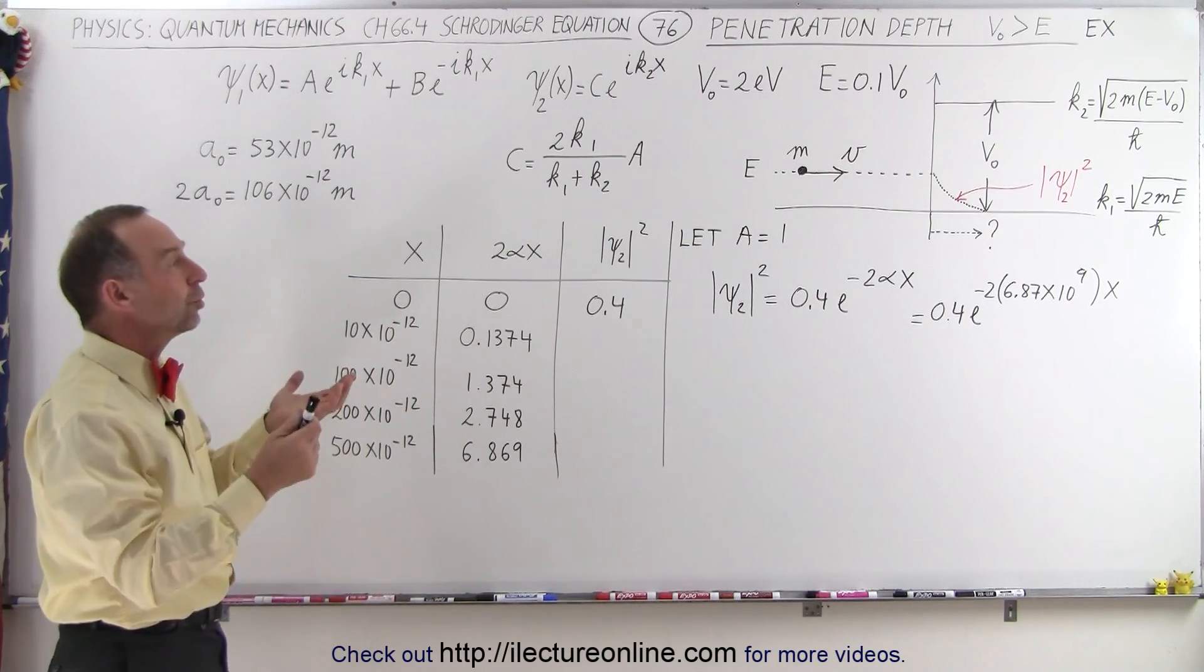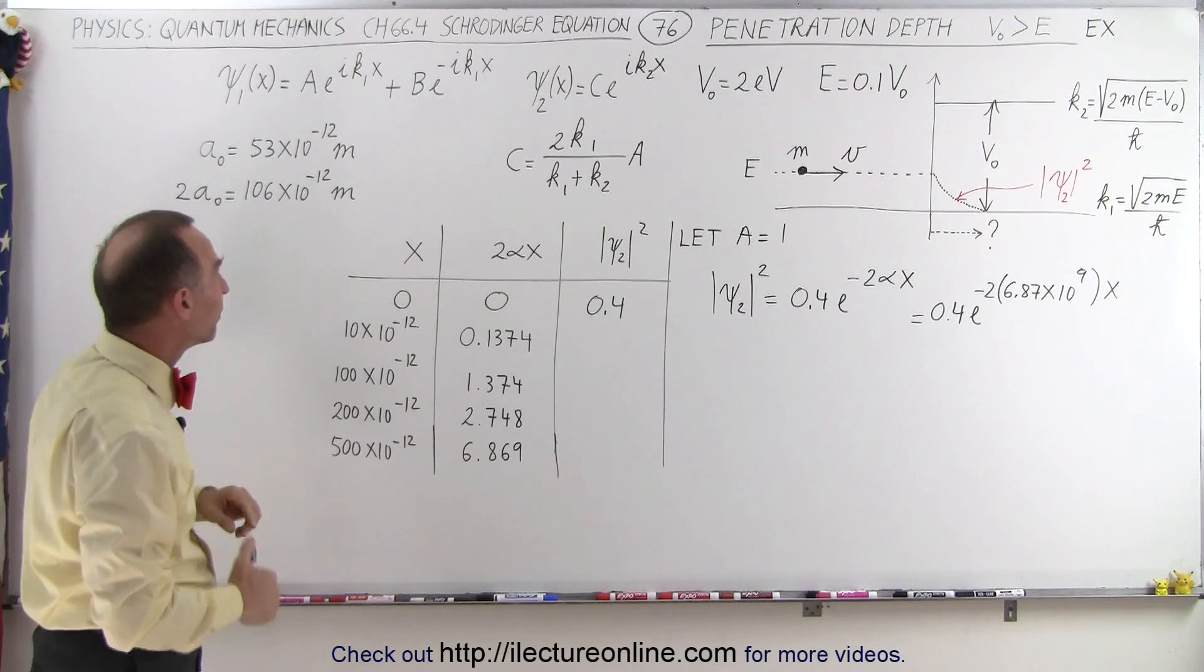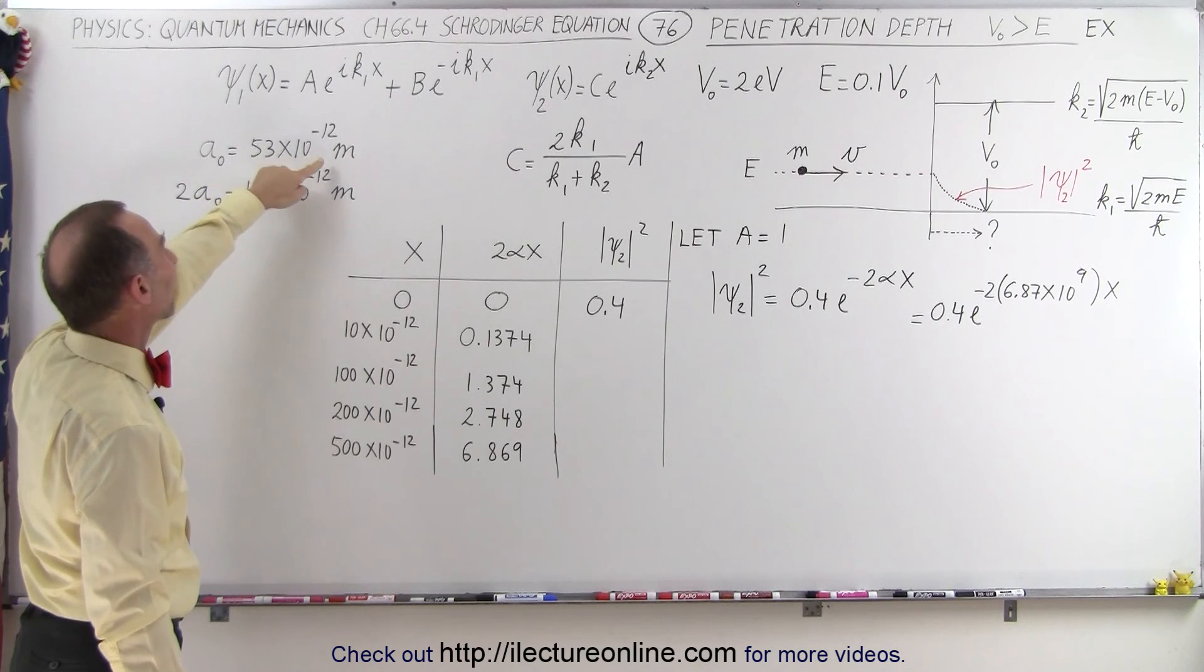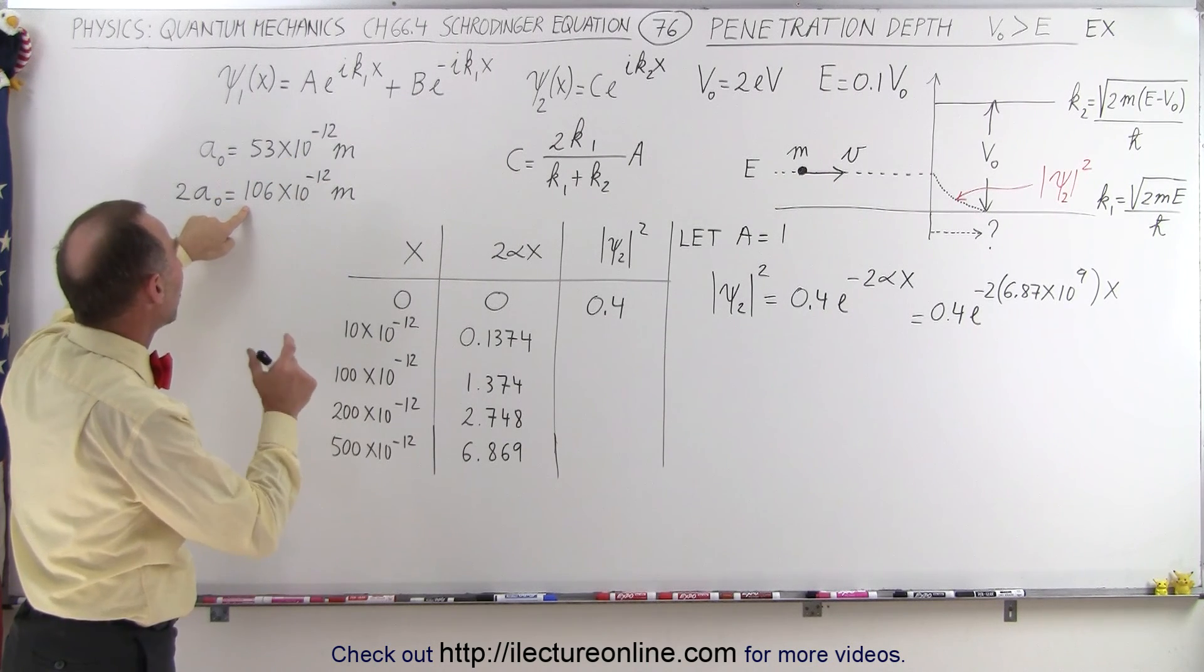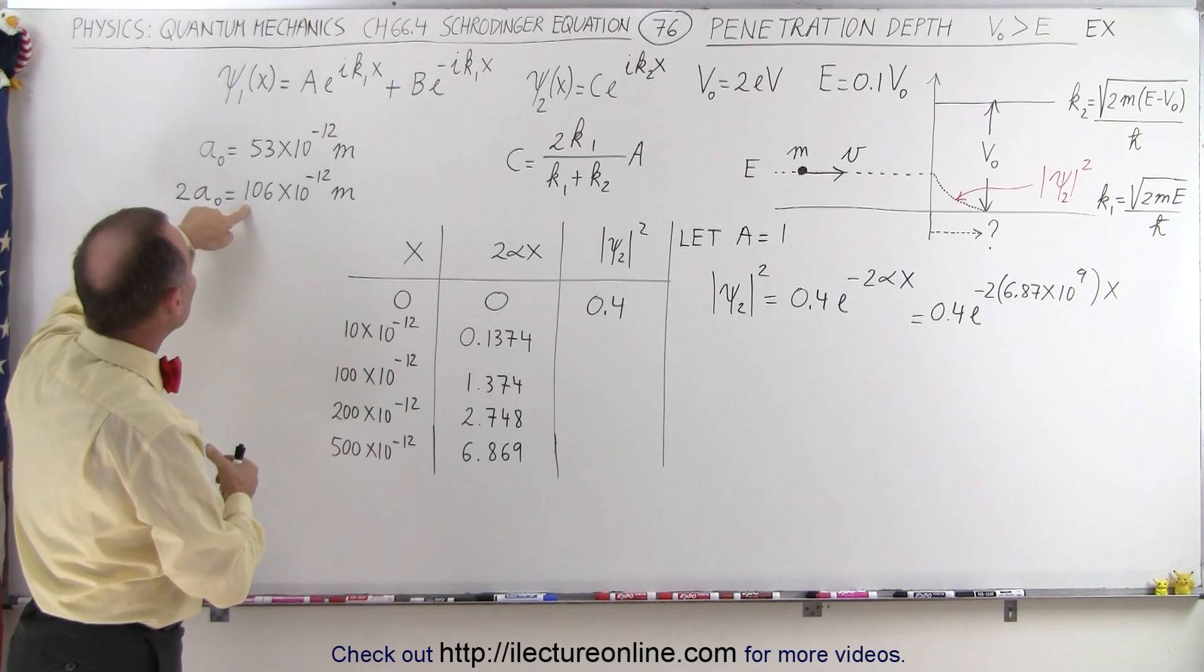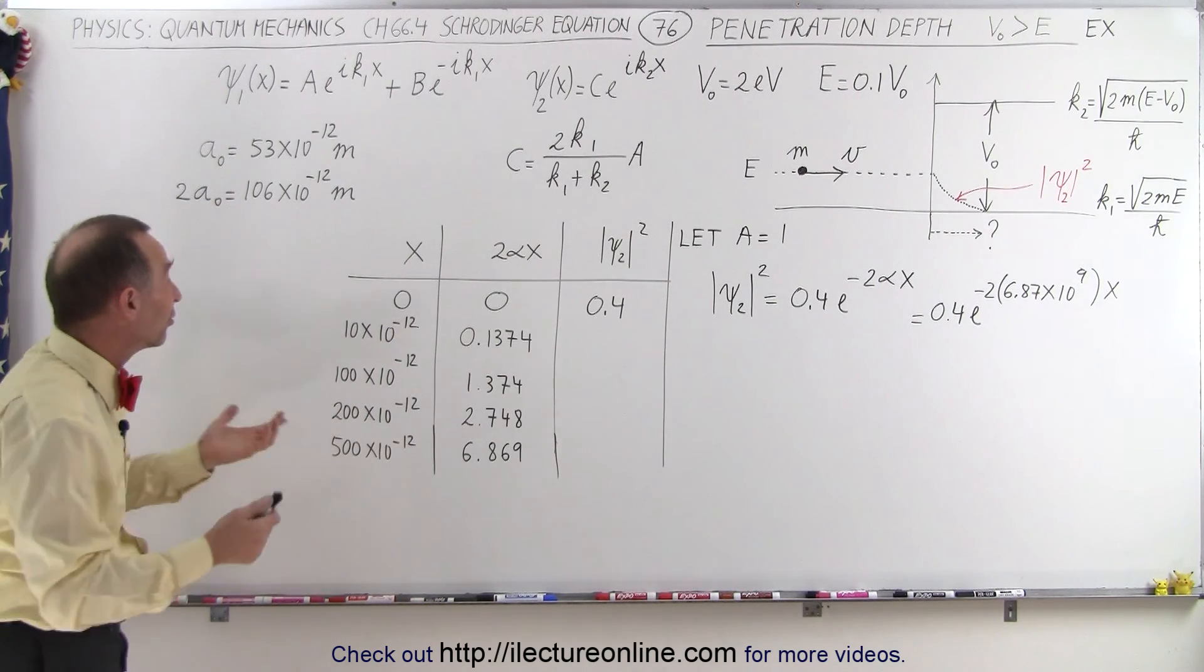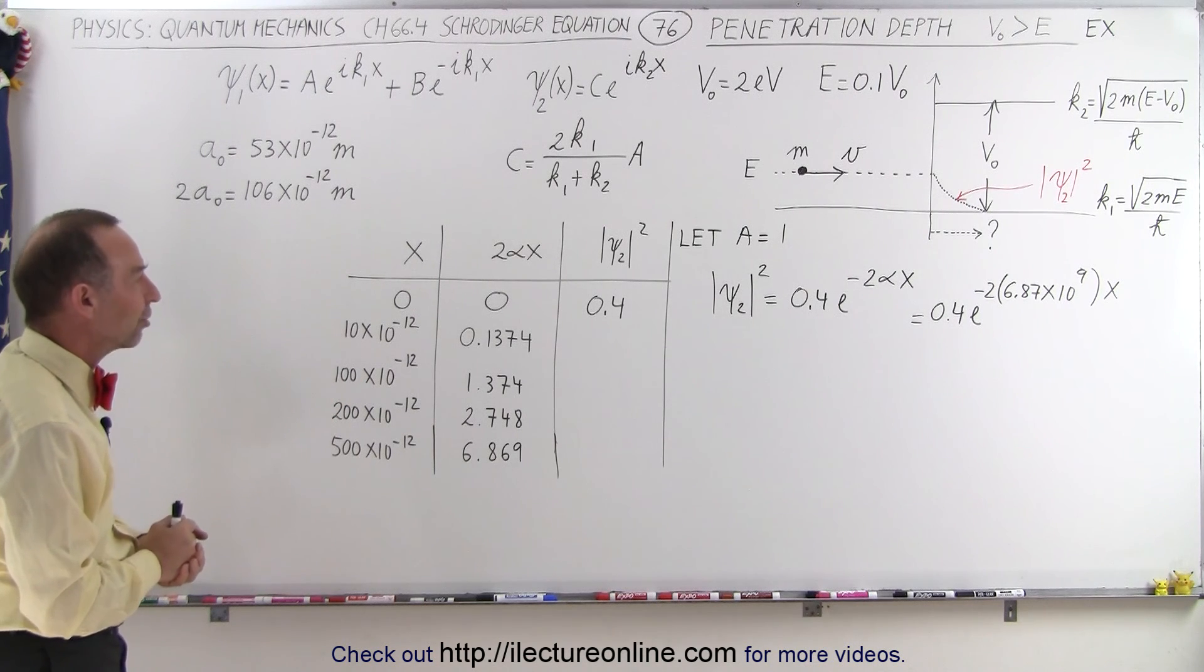So now what we're going to do is get a feel for how big that penetration depth is. To get a comparison, the Bohr radius here is 53 times 10 to the minus 12 meters, which is 53 picometers. The diameter of a typical atom like a hydrogen atom would be about 0.1 nanometers or 106 times 10 to the minus 12 meters, 106 picometers for a typical diameter of a hydrogen atom.